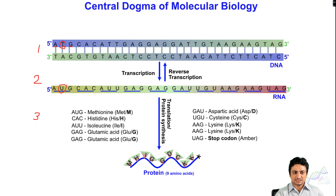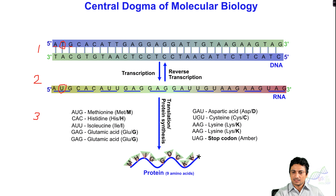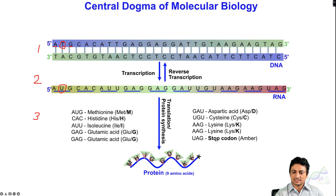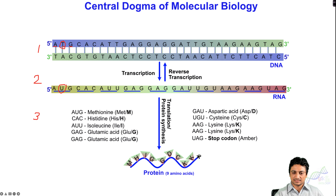Similarly, CAC is converted into histidine, AUU is converted into isoleucine, GAG into glutamic acid, GAU into aspartic acid, UGU into cysteine, and AAG into lysine. Finally, we have UAG as a stop codon, where translation stops.